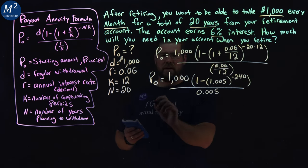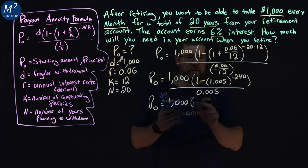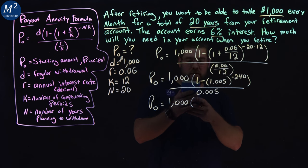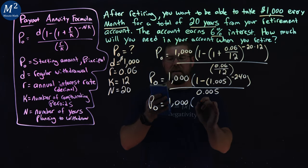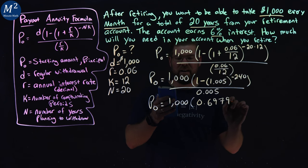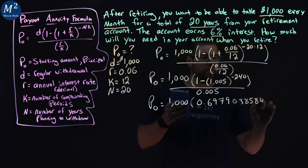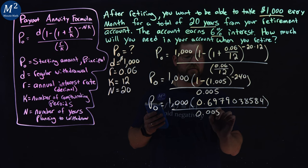Now let's go simplify this part up here. We have, let's keep it here, so 1,000 times, let's do all this. So it's 1.005 to the power of negative 240. And we do 1 minus that value. So the value was 0.302. 1 minus that gives us 0.6979038584 all over 0.005.